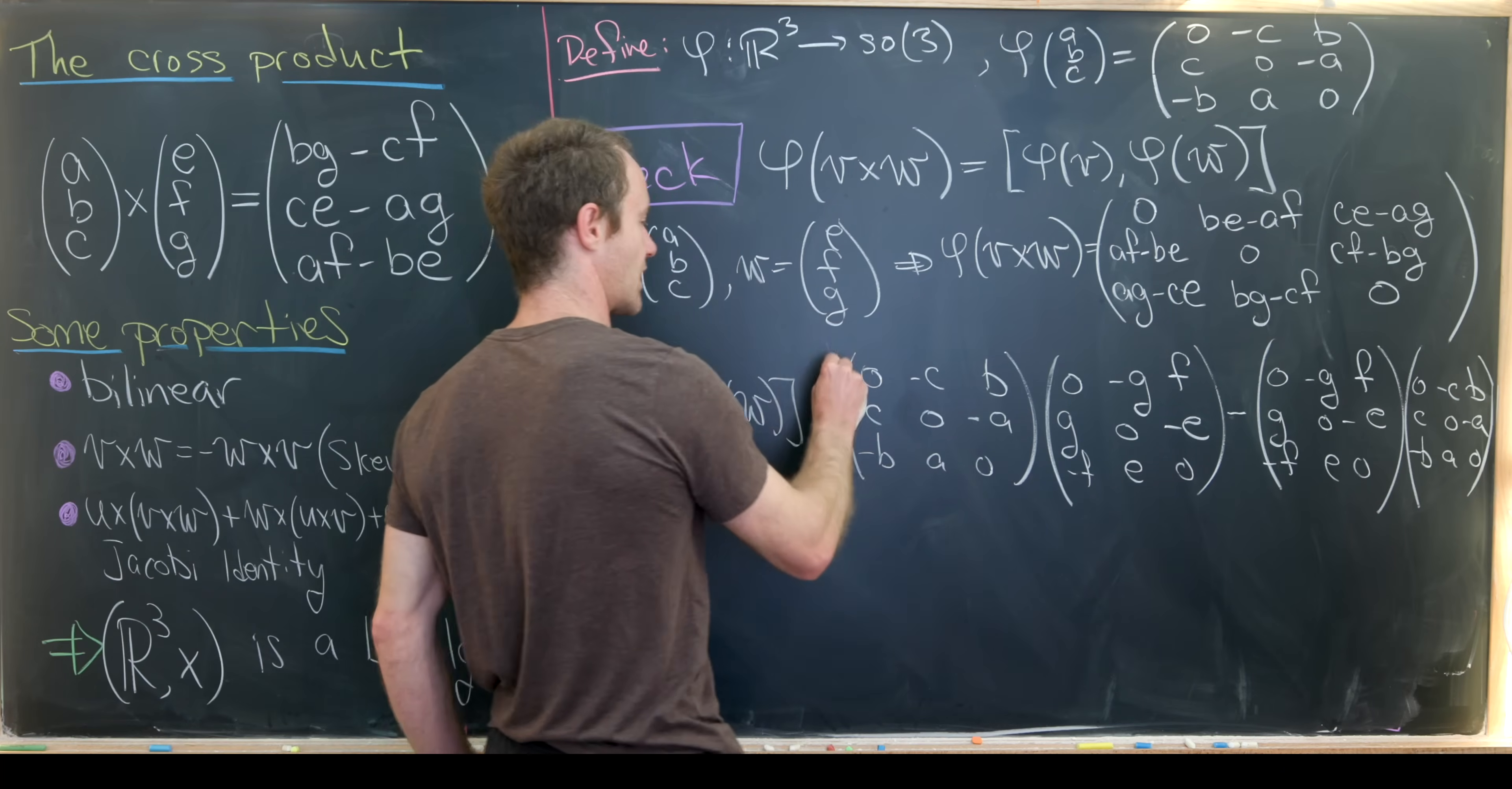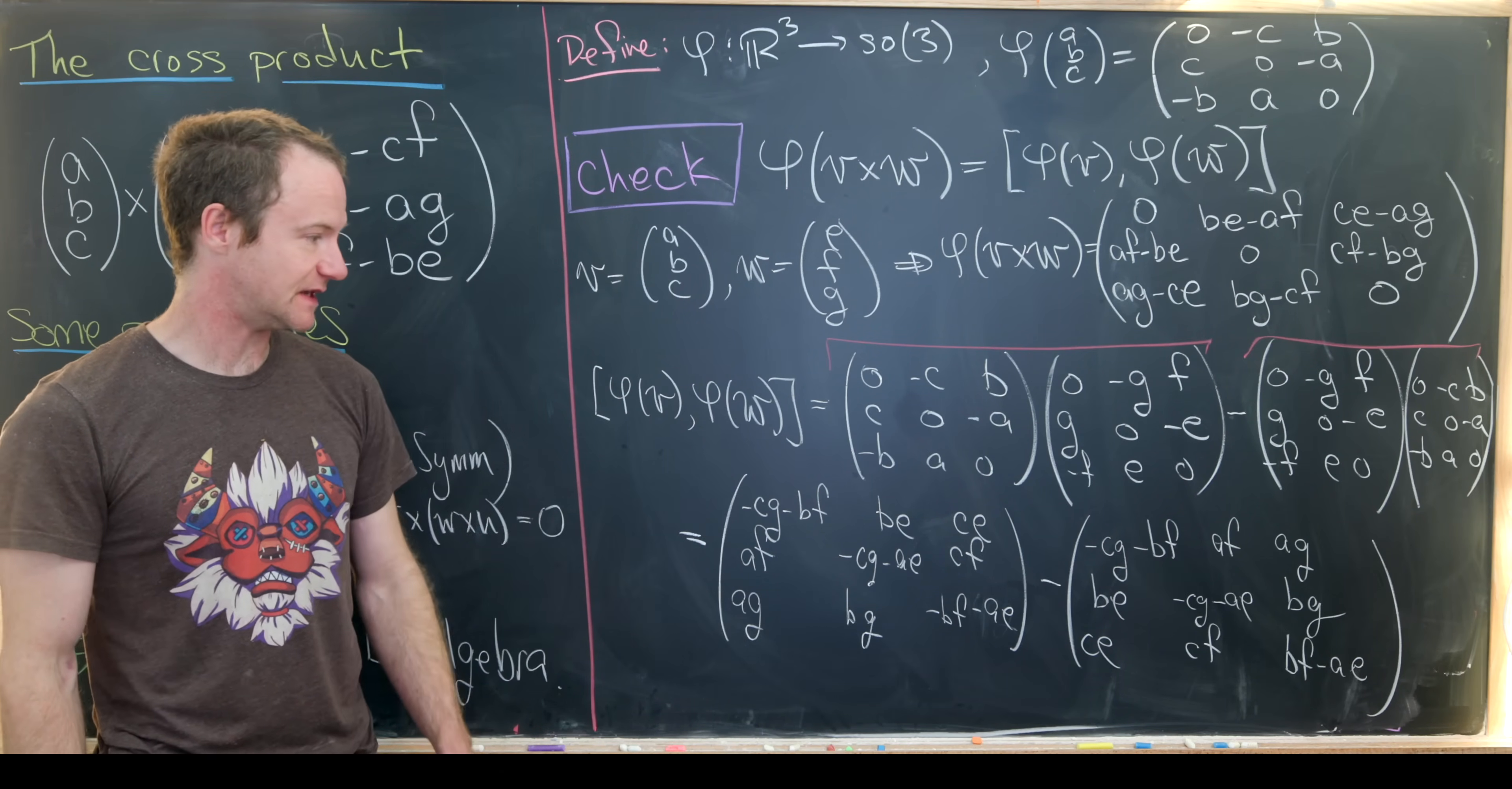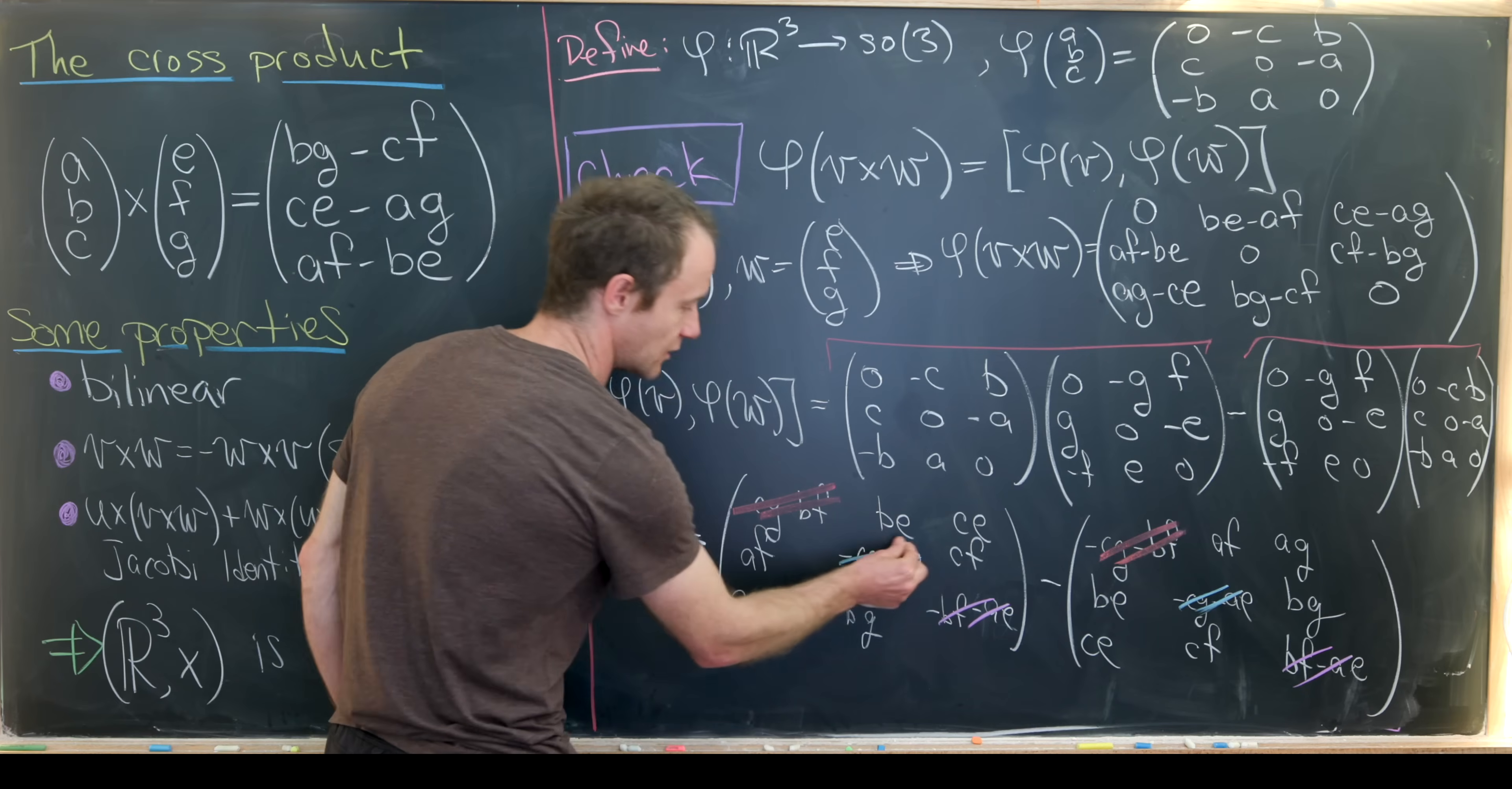So next, we just need to do the product of these two matrices versus the product of those two matrices, and then take the difference. So a lot is going on here. But if we look at it carefully, we'll notice that everything that needs to cancel will cancel. And now we just have to add up everything that's not on the diagonal. So notice here we'll have BE minus AF, but that's exactly what we have right here.